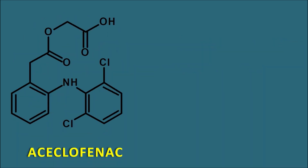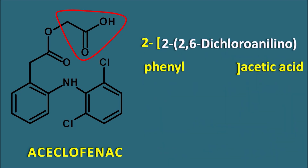The next drug is aceclofenac, which is a derivative of diclofenac. In diclofenac the phenyl acetic acid moiety is present, but in aceclofenac this acetic acid moiety is further attached with another acetic acid moiety — that is why aceclofenac is the carboxymethyl derivative of diclofenac. We write the similar name 2-(2,6-dichloroanilino)phenyl acetic acid, but here the phenyl group is attached with the acetic acid through an acetyloxy (acetoxy) group — so acetoxy is inserted. This gives aceclofenac its full name.